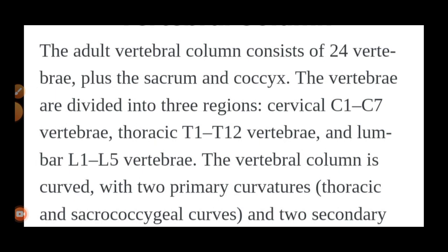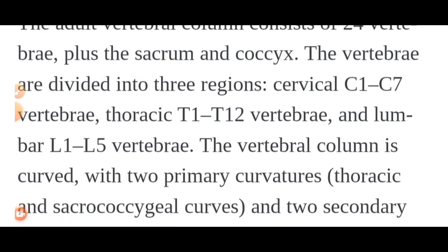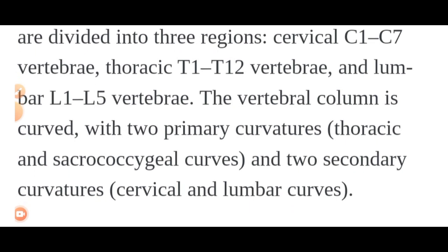The first region is cervical, counted C1 to C7. The second one is thoracic, T1 to T12 — also called the dorsal spine, D1 to D12. The third one is lumbar, L1 to L5. The vertebral column is curved with primary curvature — that is the thoracic and sacrococcygeal curvature.